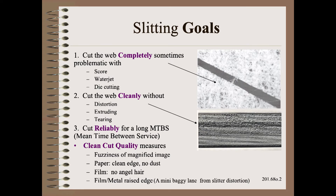Having goals is good. I offer three major areas of concern in the slitting module of my award-winning and trademarked Web 101 class, which has been taken by 5,000 students just like you. The first is to cut the web completely, which is a given for most methods except score, water jet, and die cutting.